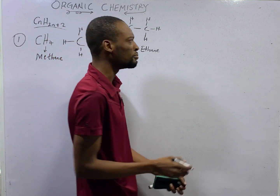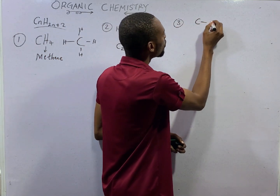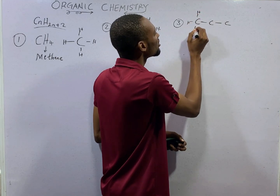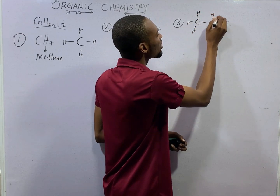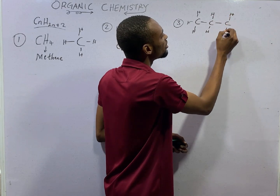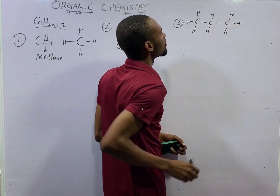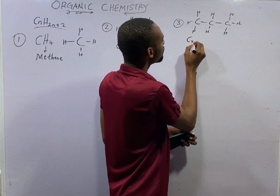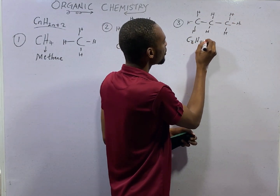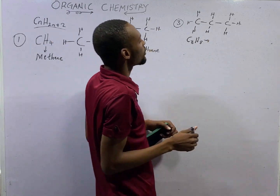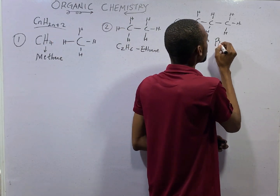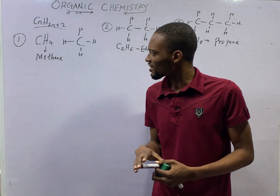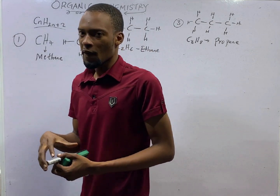The third member will be 3 carbons with hydrogen around them. Counting the hydrogens: 1, 2, 3, 4, 5, 6, 7, 8 — so C3H8. That is 3 times 2 equals 6, plus 2 equals 8. This is propane. The third member of the alkanes is propane.